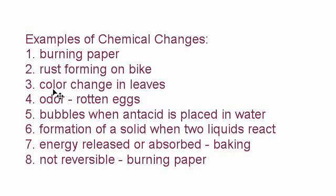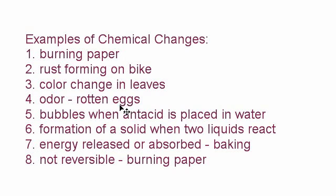Beware of changes in color — that could indicate a chemical change. For instance, in summer you may see green leaves on trees, and in fall the leaves change to a reddish-orange color. That is a chemical change having to do with the pigmentation of the leaves — pigment is what gives leaves their green or red color. Another indicator is odor: if something smells bad, like rotten eggs, it's probably because a chemical change happened.